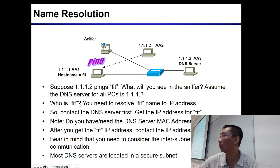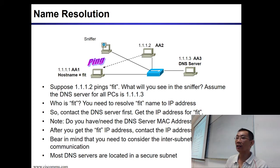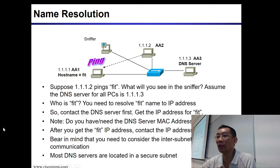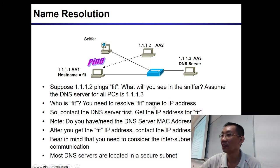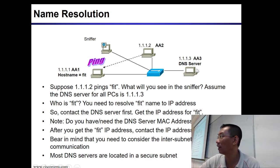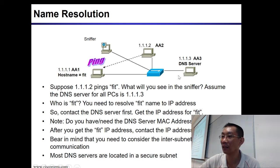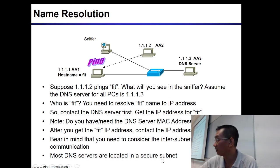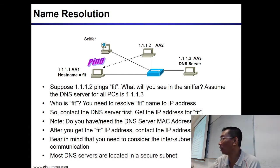First you need to find out who FIT is — you need to resolve the FIT name to an IP address. So you need to contact the DNS server first to get the IP address of FIT. But do you have the DNS server MAC address? You need to do address resolution to get the DNS server MAC address. Bear in mind, most DNS servers are located in another subnet, so remember the previous lecture about ARP and inter-subnet communication.